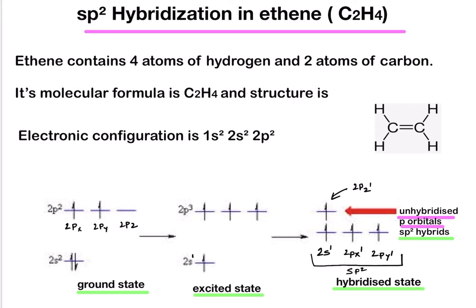The electronic configuration of carbon is 1s2, 2s2, and 2p2. In the ground state, that is the normal state, the electronic configuration of the carbon atom is 1s2, 2s2, 2px1, 2py1, and 2pz has no electrons.